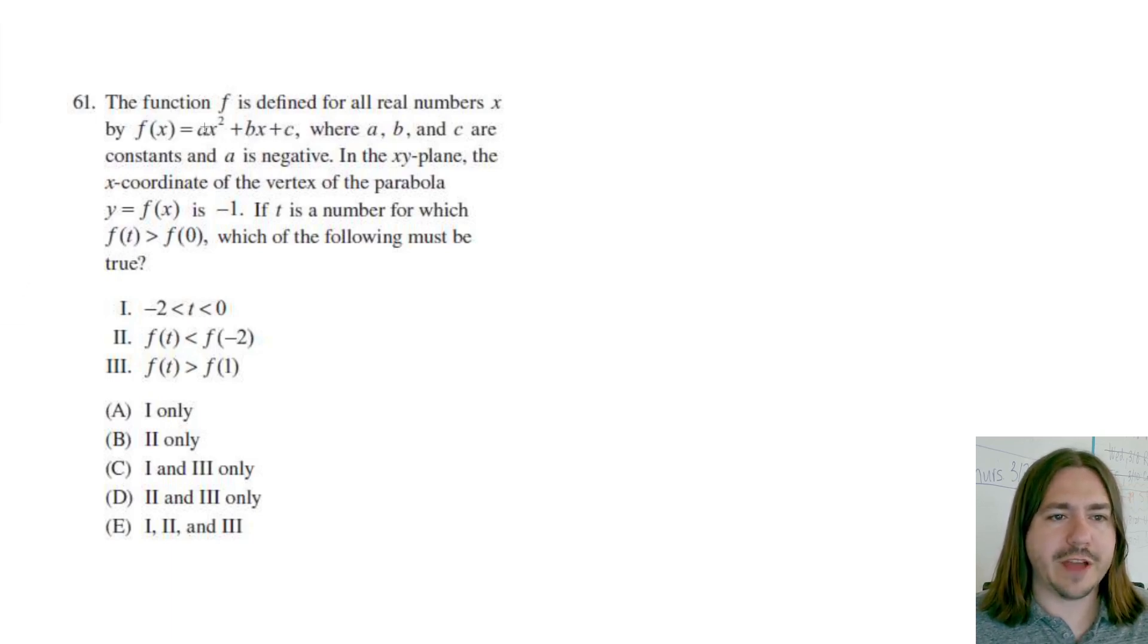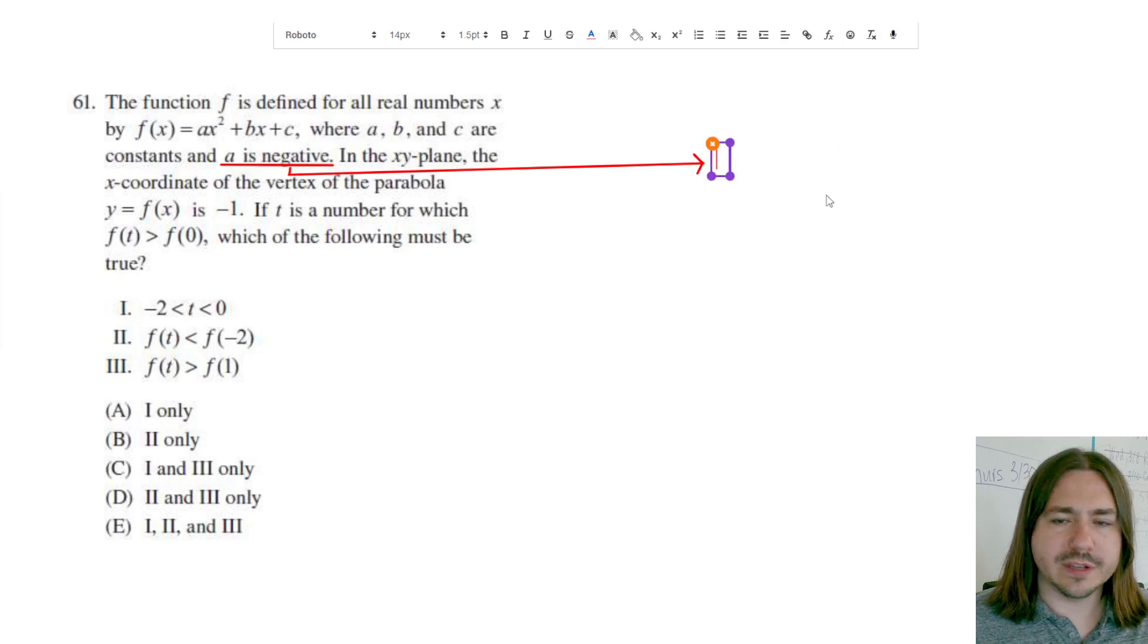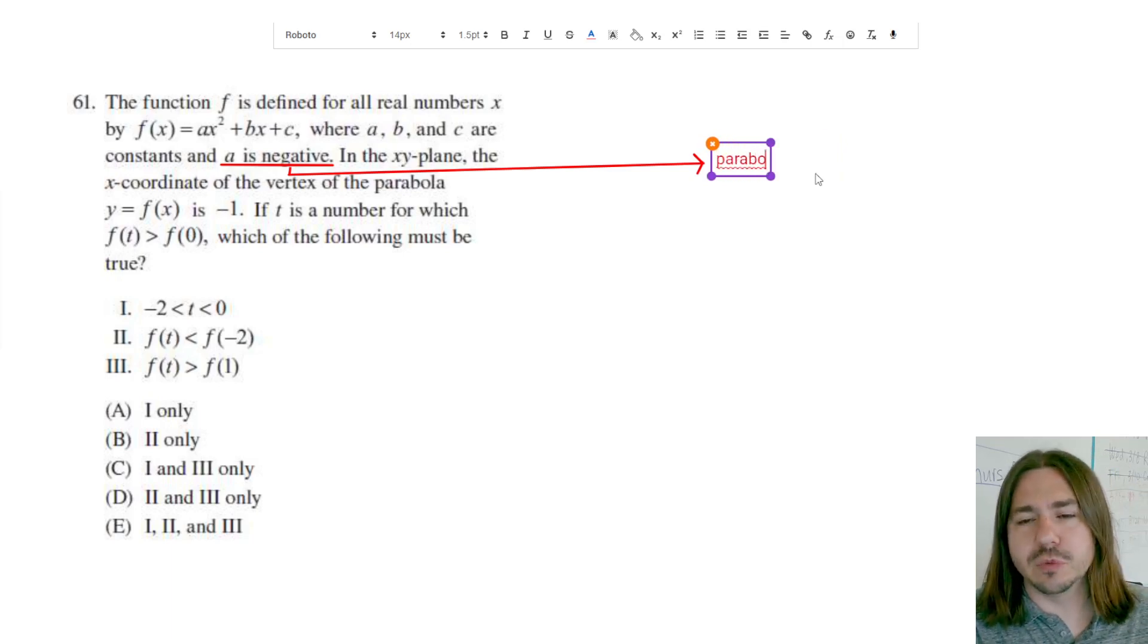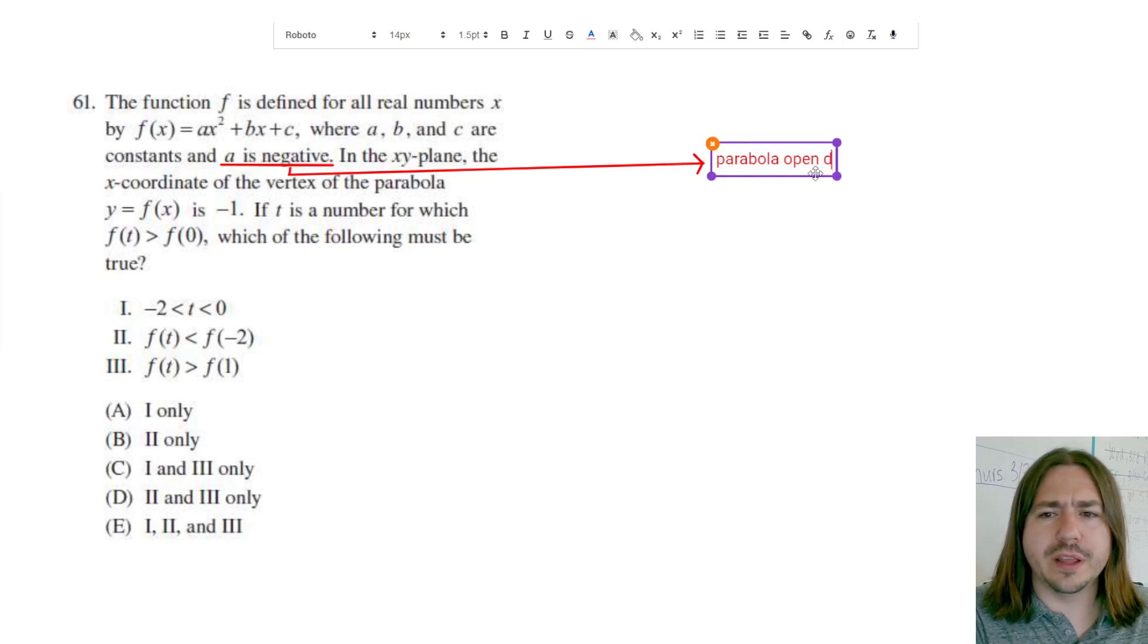So right away, the fact that the leading coefficient here, the number in front of x squared, the fact that this is negative, this actually has some significance. I haven't even finished reading the problem yet, but I want to point out, because it will probably come up, that when the a value is negative, the graph of this quadratic function, which is called a parabola, it's going to open down. So a parabola opens down. Anyway, so it says a is negative.